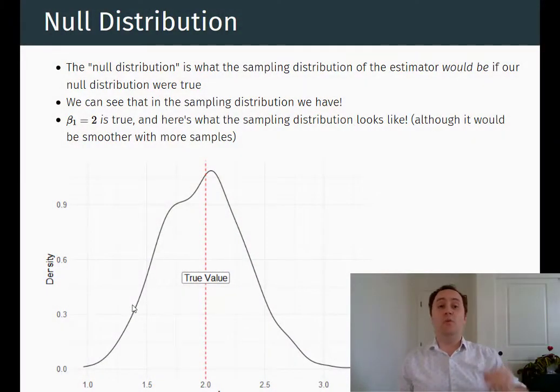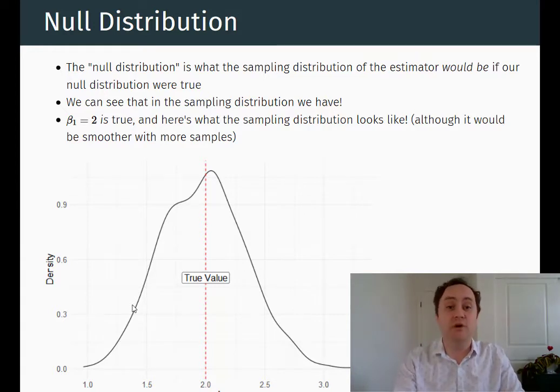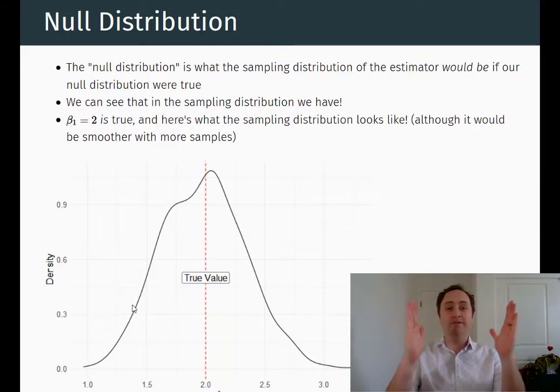So what we're going to do, we're going to characterize the null distribution, the null sampling distribution of our estimator under the assumption that the null is true, and we're going to check how unlikely our estimate is. So let's take our estimate that we had before. We're testing the true value of 2, and we actually got a 2.22. How unlikely was that to occur? We would take this sampling distribution and see how far out in the tails our estimate is.